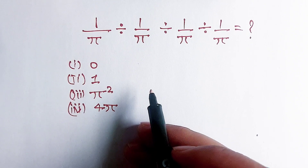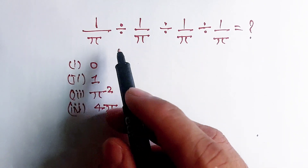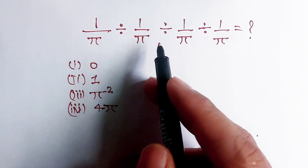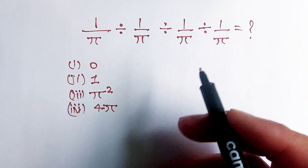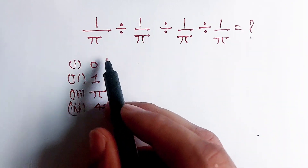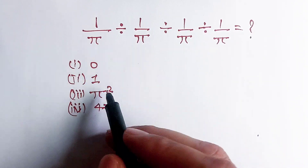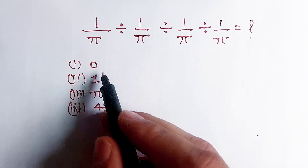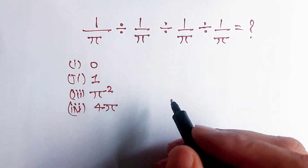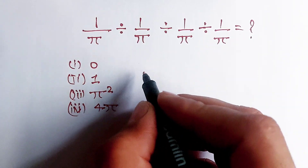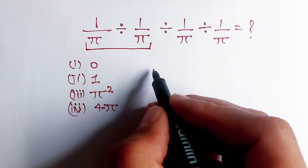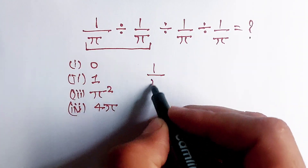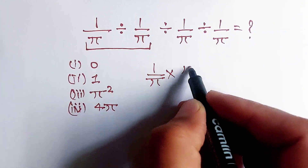The question is: 1 over π divided by 1 over π divided by 1 over π divided by 1 over π — equal to what? We are given four options and we have to find the value. First of all, we can write this as 1 over π divided by 1 over π.